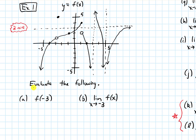Part A says, what is f of negative 3? If I look at my graph where the x value is negative 3, where is the point on the graph? The point is all the way up here. So f of negative 3 is asking, what is the output — what is the y value when x is negative 3? And the output is 5.